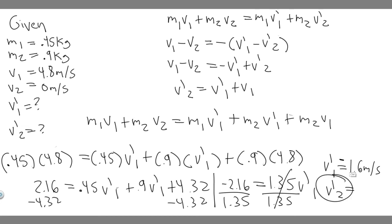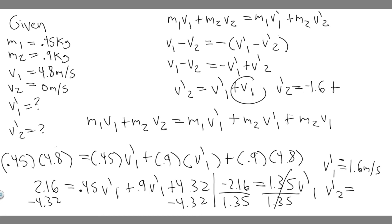We can solve for v'₂ using the equation we derived: v'₂ = v'₁ + v₁. We now know v'₁ = -1.6 and v₁ = 4.8, so: v'₂ = -1.6 + 4.8 = 3.2 m/s. So v'₂ = 3.2 meters per second.